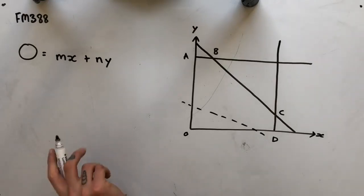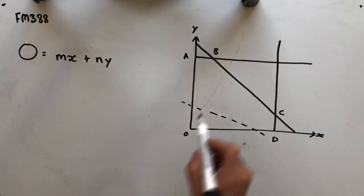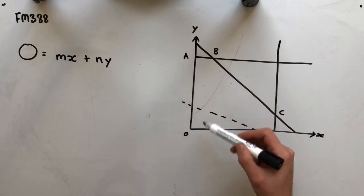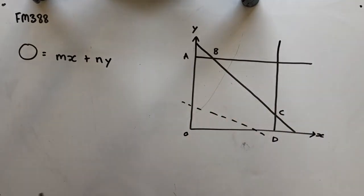Hey guys, welcome to question FM 388 of the Further Maths Fortify Study Guide. This question reads, the feasible region for a linear programming problem is shaded in the diagram below. Now in that diagram, this area here is shaded, sort of between the origin ABC and D.